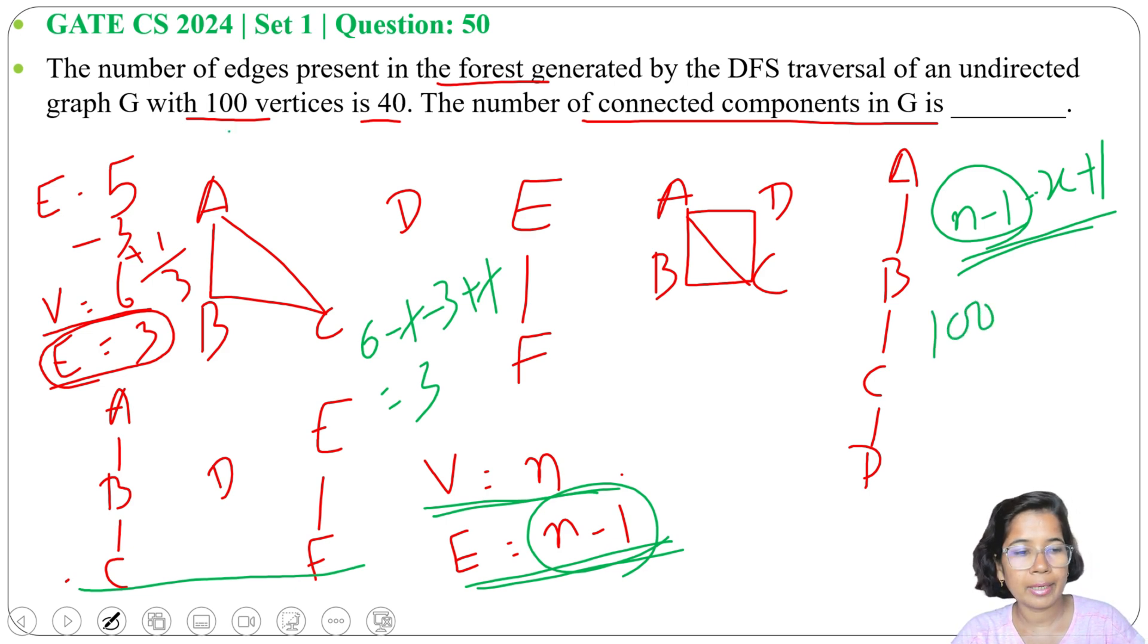So in this case, what we can do? 100 minus 1. So if the graph will be single connected, then there will be 99 edges. But it's not, it's a DFS forest. It has multiple components. And how many edges does it have? 40. Minus 40 plus 1. So minus 1 plus 1 cancel. There will be 60 connected components. So answer will be 60.